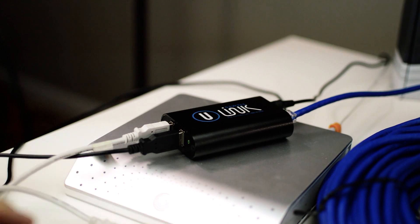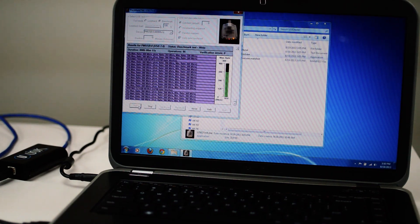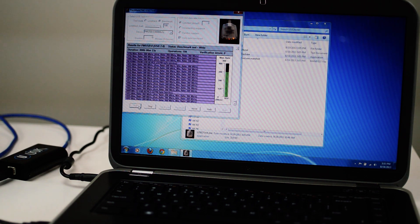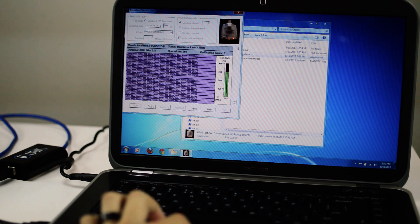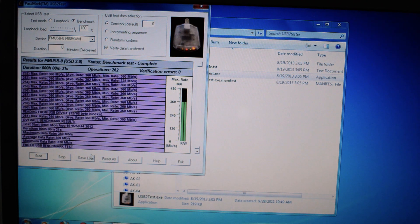We will now do a benchmark test with the Passmark USB 2.0 tester and its software, and we'll let it run for about 30 seconds. As you can see, we get a max speed of 360 megabits per second read and 360 megabits per second write with an average data rate of 358 megabits per second.